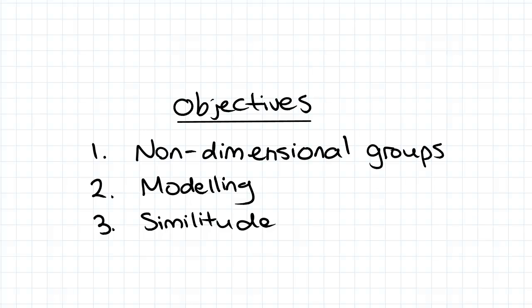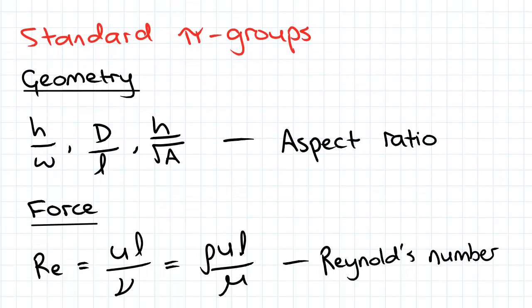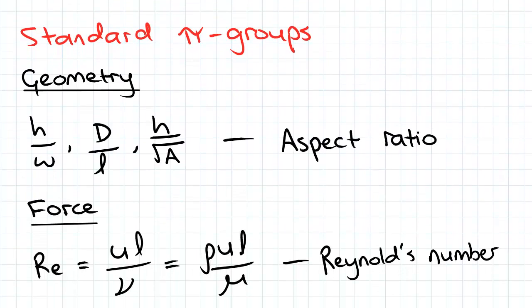These are what we call standard dimensionless pi groups because they are defined relations in fluid dynamics. So in actual fact the Buckingham-Pi procedure can be simplified when we recognize variables that can be formed into these standard pi groups.